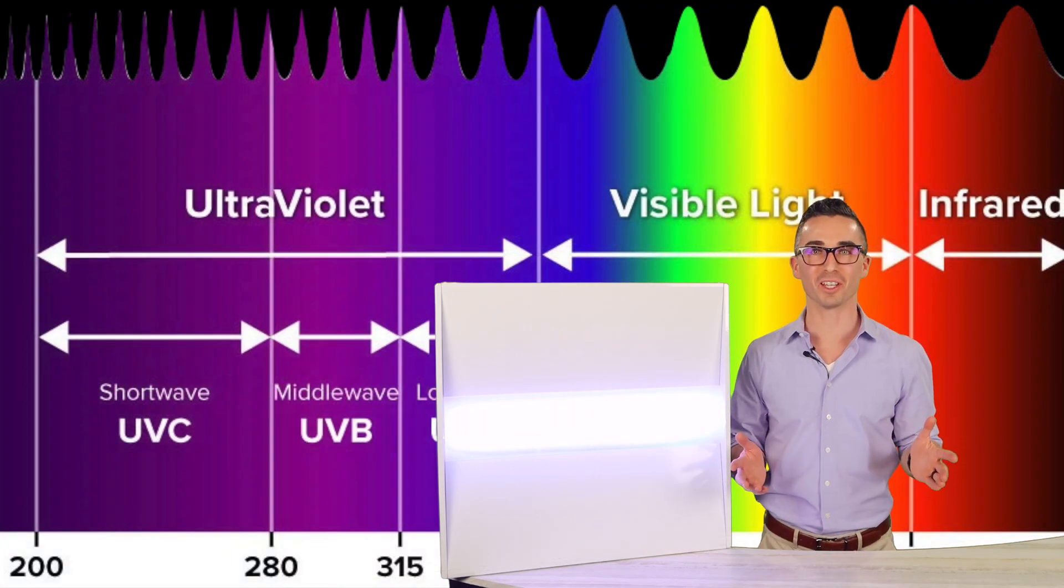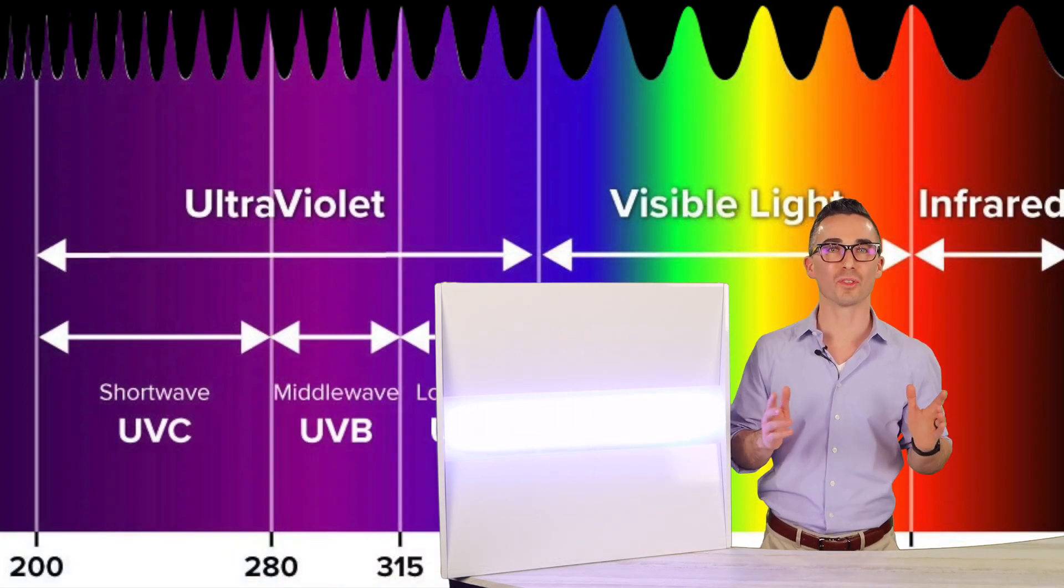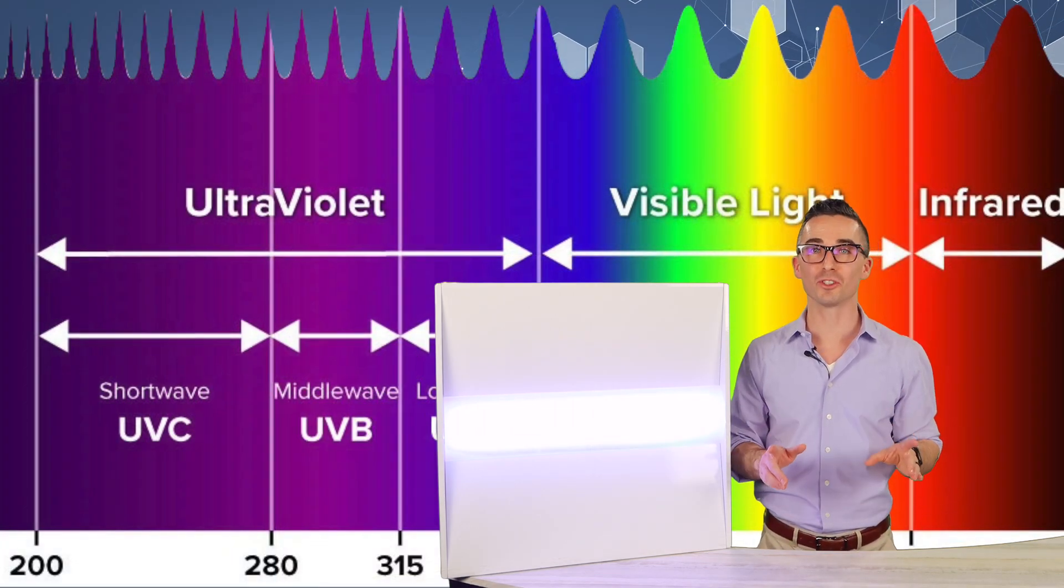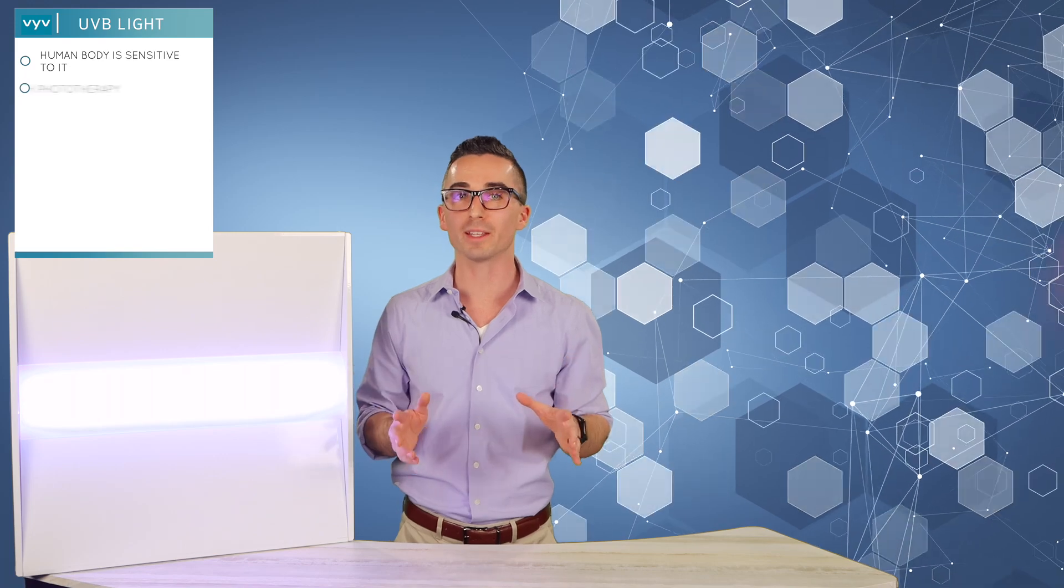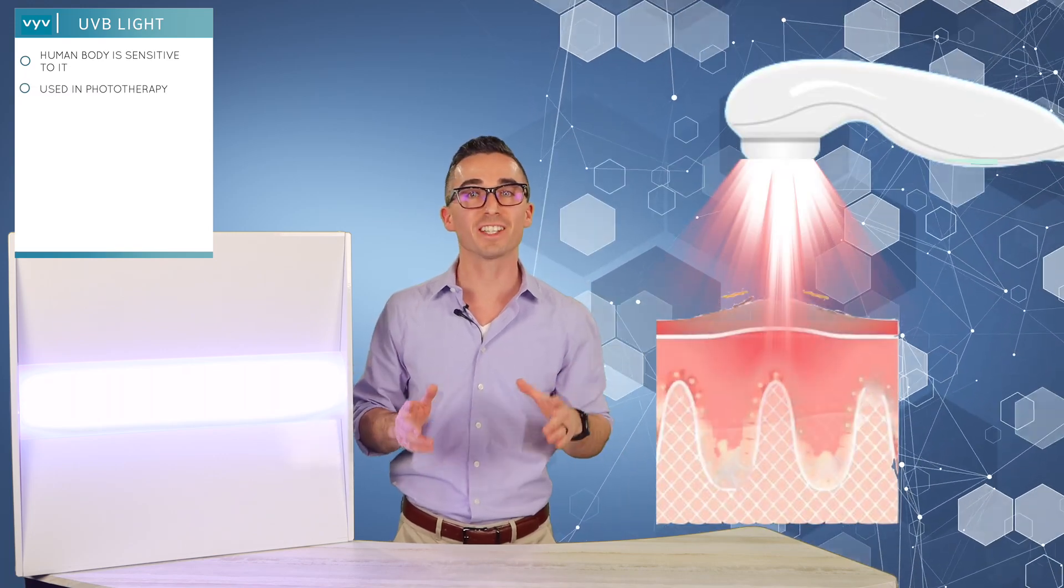UV-B is medium wave UV measurable at 280 to 315 nanometers. It's similar to UV-C in that it also requires extra precaution because the human body is sensitive to it. Which is why UV-B is used in phototherapy for skin conditions like psoriasis or atopic dermatitis.